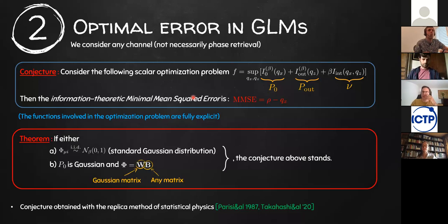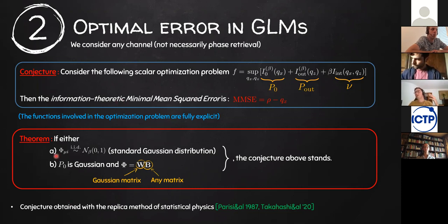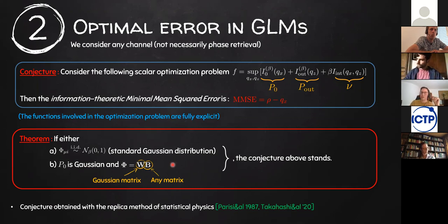We can prove this conjecture in two cases. First, if the matrix is Gaussian, real or complex — the real case was already done a few years ago by Jean Barbier and others, and the complex case goes through as well. Second, if the prior is Gaussian and the sensing matrix is essentially a Gaussian matrix times another matrix, with very light assumptions on it. In either of these two cases, we can prove the above conjecture.